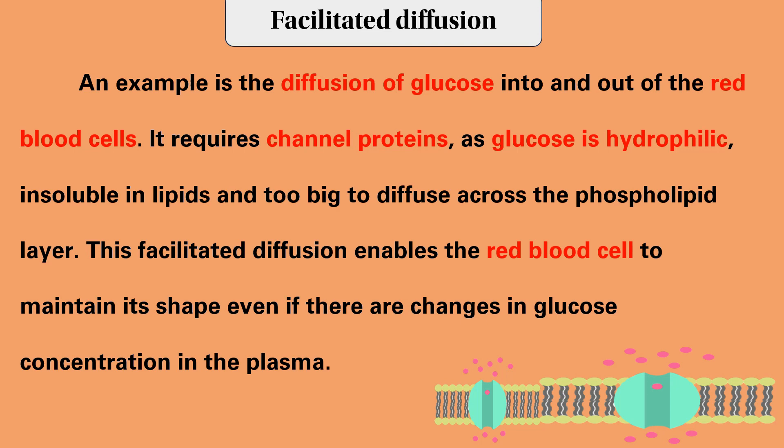Facilitated diffusion is the diffusion of glucose into a cell — for example, into a red blood cell. This is the diffusion of glucose via a carrier protein. Glucose moves by facilitated diffusion, enabled by specific transport proteins.